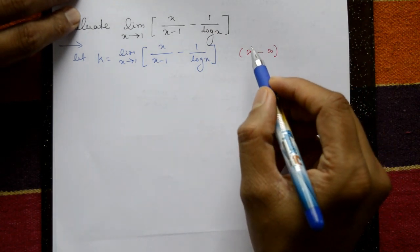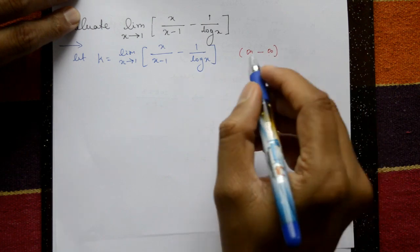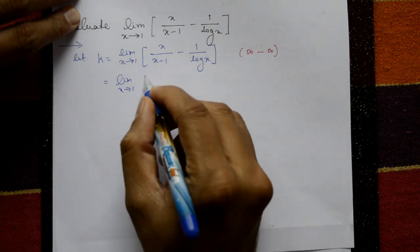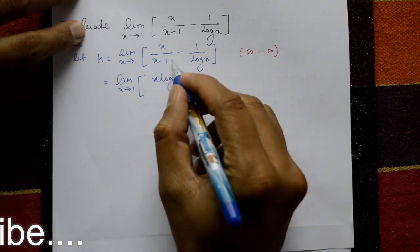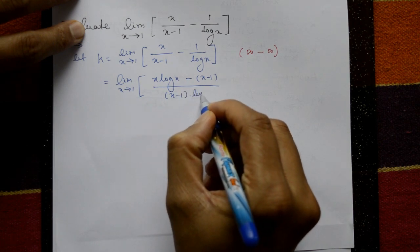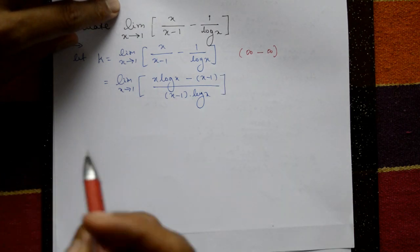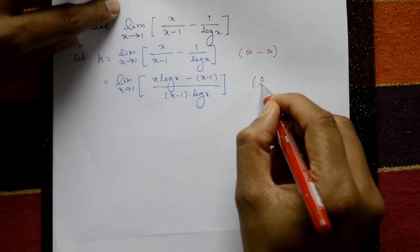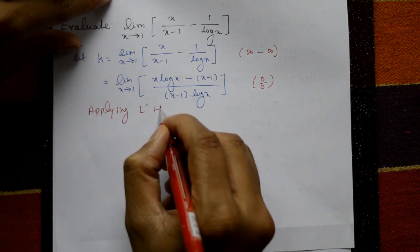Since we have infinity minus infinity, take LCM: k = limit x tends to 1 of [x·log x minus (x-1)] divided by [(x-1)·log x]. Now take x = 1: numerator gives 0 and denominator gives 0, so this is a 0/0 form. Now we can apply L'Hôpital's rule.